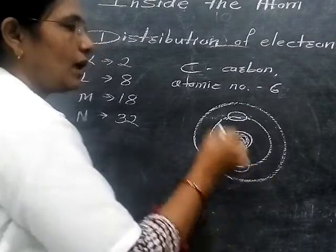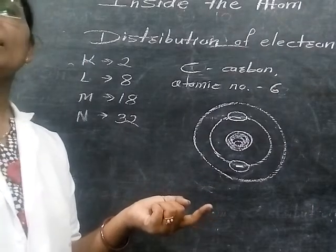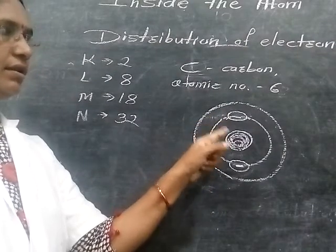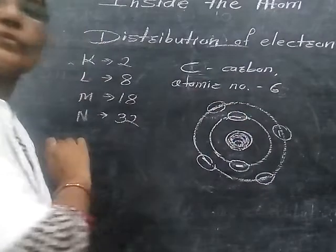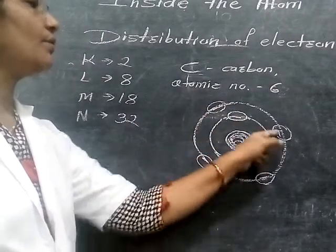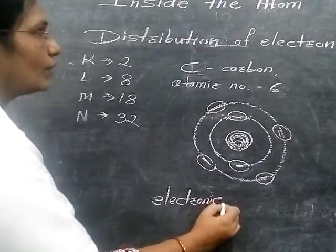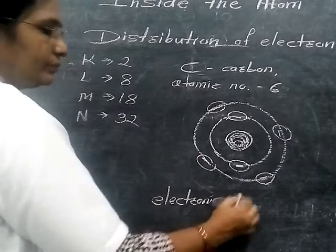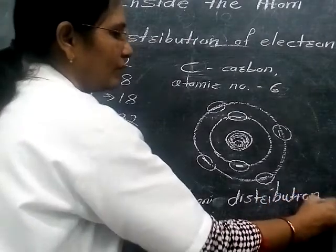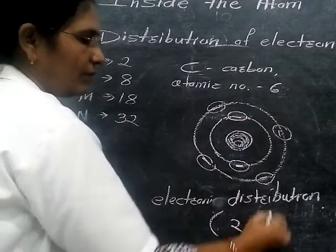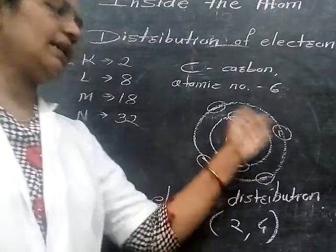Now, how many electrons are remaining? There are 4 electrons remaining. So these 4 electrons go into the second shell: 1, 2, 3, and 4. The total number of electrons is 1, 2, 3, 4, 5, 6. The electronic configuration, or electron distribution, for carbon is 2, 4. Total number of electrons is 6. In this manner, you can find out the number of electrons revolving in a specific orbit.